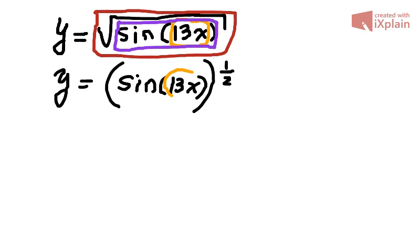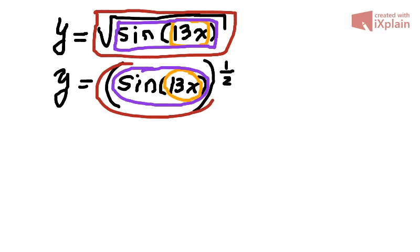So the inner function is 13x, the second function around it is sine of that, and the third function around it is a power function. This way the expression looks a little bit less complex.